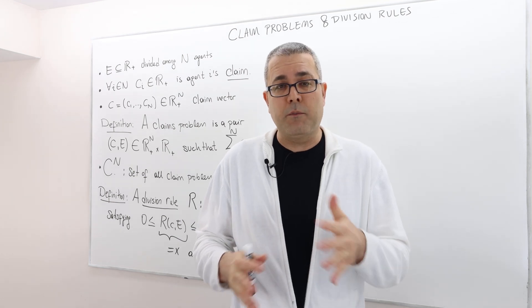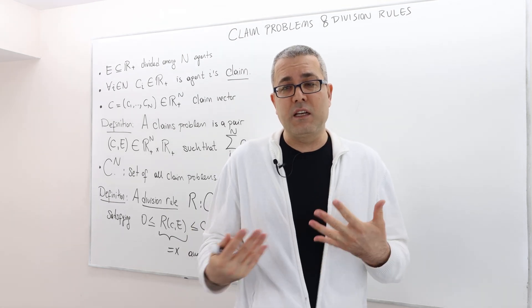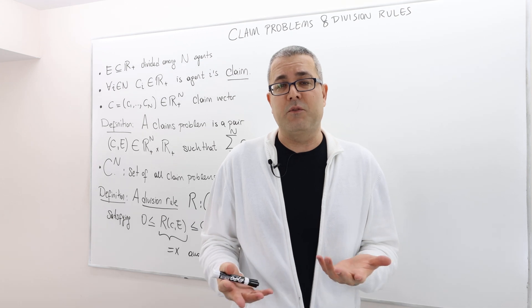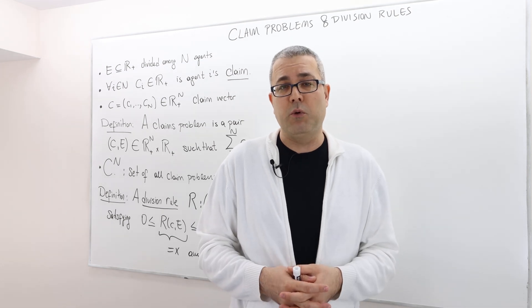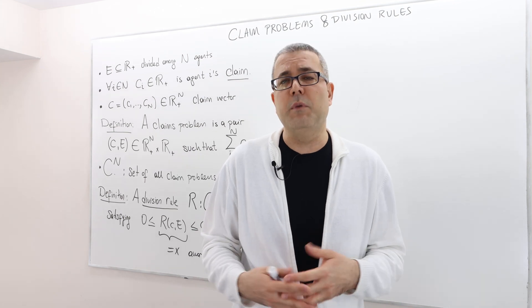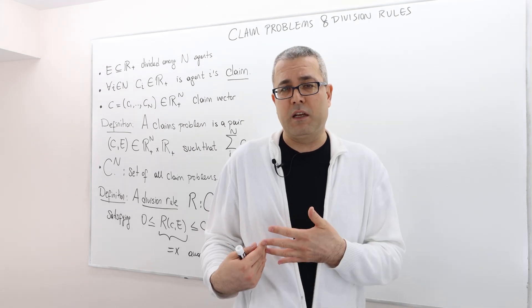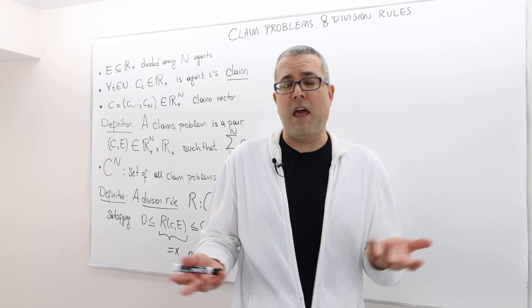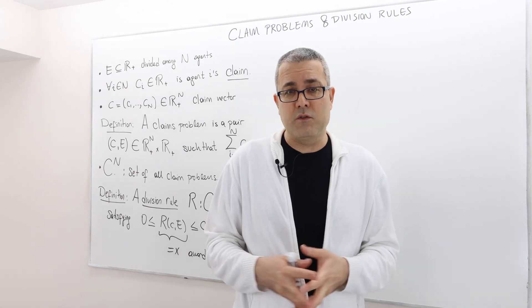The problem here is, my claim $80,000, your claim $70,000. Clearly, our claim, the total claim exceeds the amount of money we're supposed to split, which is $100,000. If the world was such that I claim $80,000 but you claim only $20,000, we don't really need to negotiate anything, right? Because I just get my claim, you just get your claim, and then that's it. We dissolve the partnership.